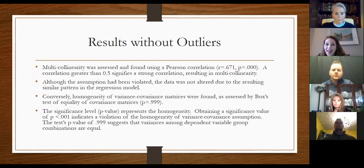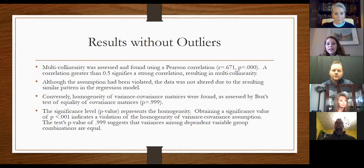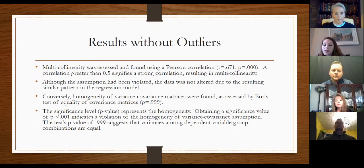However, there was still multicollinearity — though looking at the numbers, they were actually smaller. The threshold was not to exceed 0.5, and the result was 0.671, which was a little closer to that margin. On the positive side, there was now equal variance among the data once those outliers were removed, which was a meaningful change.